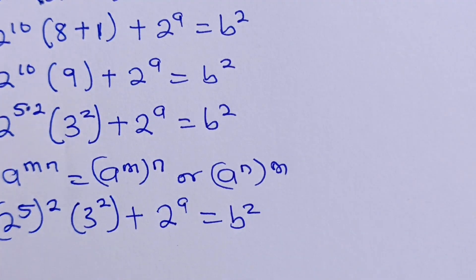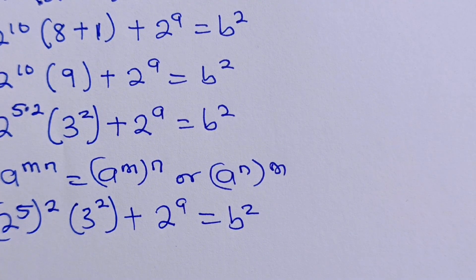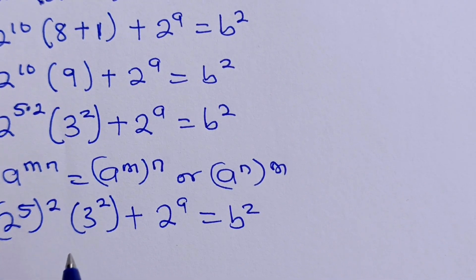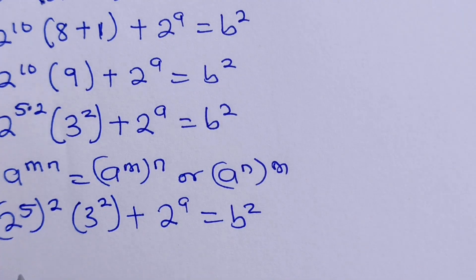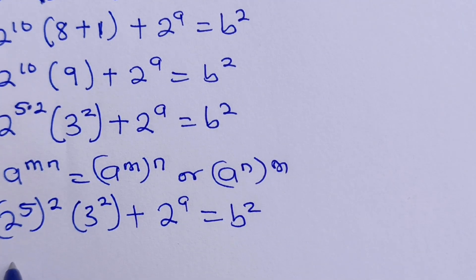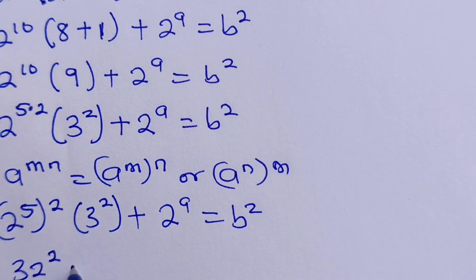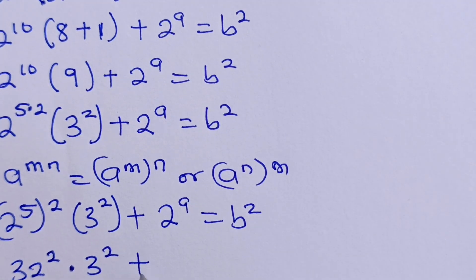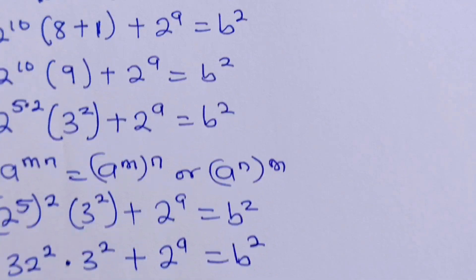We are now forming the difference of 2 squares, using a law in exponents to get something from here. Now let's continue: 2 to the power of 5 will give us 32. So we have 32 squared multiplied by 3 squared, plus 2 to the power of A is equal to B squared.